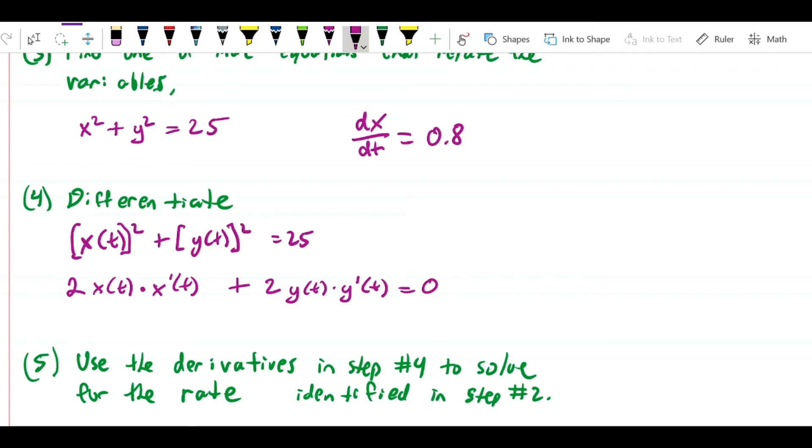The thing to recognize is that we don't usually write this as a function. We're just sort of understanding that the variables are functions of time. If I were to rewrite this in a more compact form, I would just say 2 times x times dx dt, and this is 2y dy dt, and that equals zero.